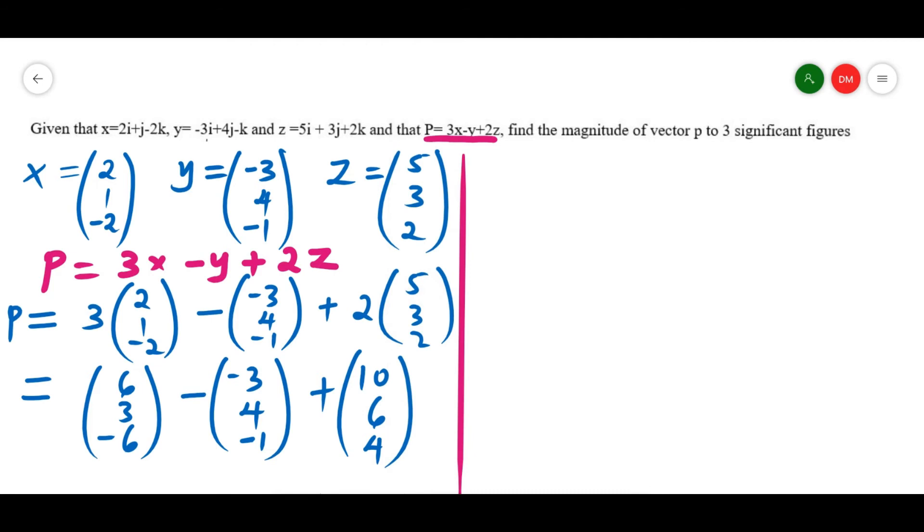Adding the top part is going to give p. 6 minus negative 3 will give positive 3, plus 10. Then the second row, 3 minus 4 plus 6. Third row, negative 6 minus negative 1 gives plus 1.